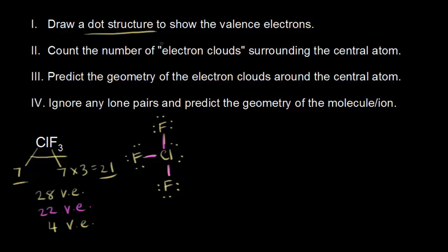We move on to step two: counting the number of electron clouds surrounding our central atom. Electron clouds are regions of electron density, which includes both bonding and non-bonding electrons. We have three bonding pairs and two lone pairs, giving us a total of five electron clouds surrounding our central atom.